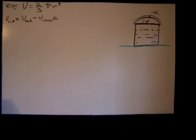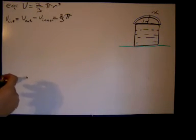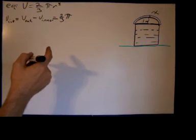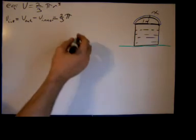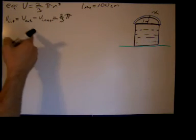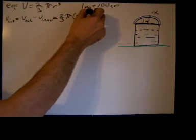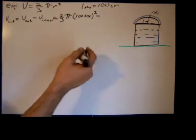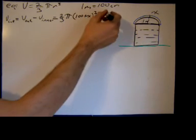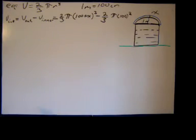The volume of the outer hemisphere is two-thirds pi times the quantity (100 + x) cubed, where the radius of the outer hemisphere is x plus the radius of the inner hemisphere. Since the rate of change was given in centimeters and the radius in meters, I'm changing that 1-meter radius into 100 centimeters. Then minus the volume of the inner hemisphere, which is two-thirds pi times 100 cubed.